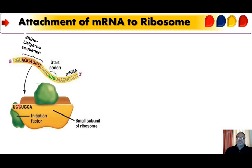The initiation begins with the binding of initiation factor 1 and initiation factor 3 to the small 30S subunit. The role of the initiation factors is to stop the 30S subunit from binding to the 50S subunit in the absence of mRNA and F-met transfer RNA.